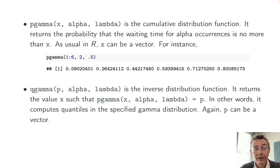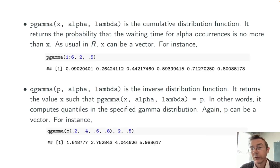The inverse of that is qgamma, the inverse distribution function. It returns the value X such that pgamma of X, alpha, lambda is equal to the P specified in your qgamma call. It computes quantiles in the specified gamma distribution, and as usual, P here can be a vector. For instance, qgamma of the vector (0.2, 0.4, 0.6, 0.8), 2, 0.5 gives you the 20th, 40th, 60th, and 80th percentiles in that same gamma distribution.